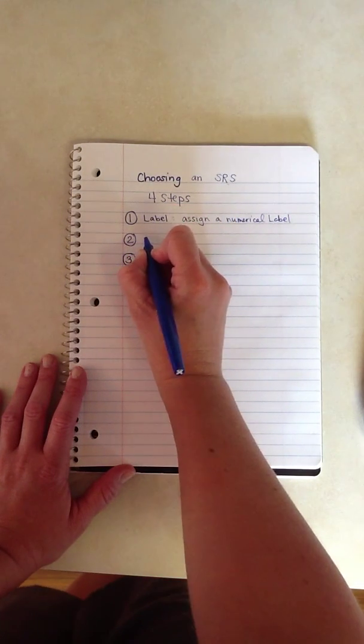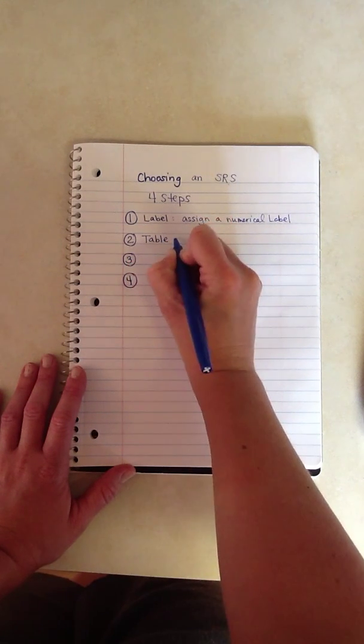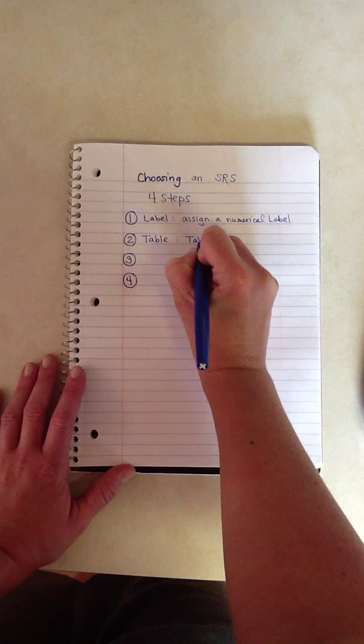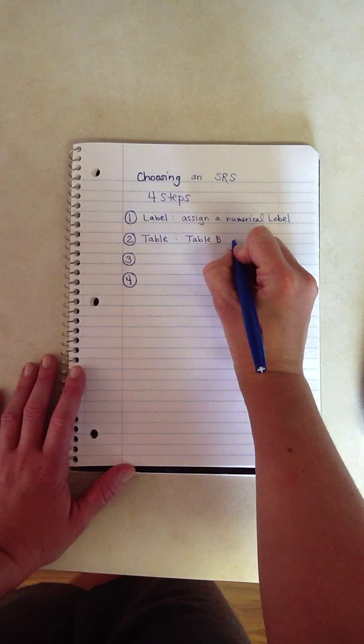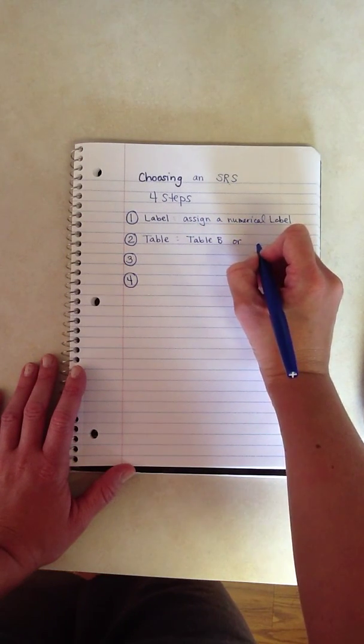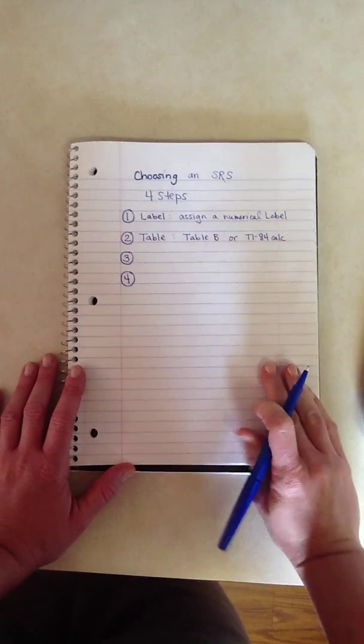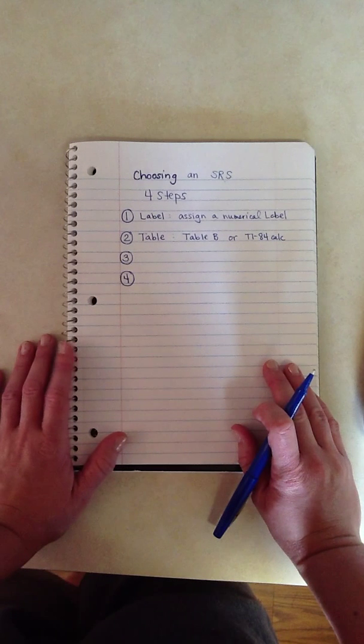So step number two would be to select a table to use of random digits. In the textbooks that we have, they're actually located in table B in the back of the book. Or if you don't have a textbook, you could use a TI-84 calculator, or you could get a random number generated table from your professor or teacher.